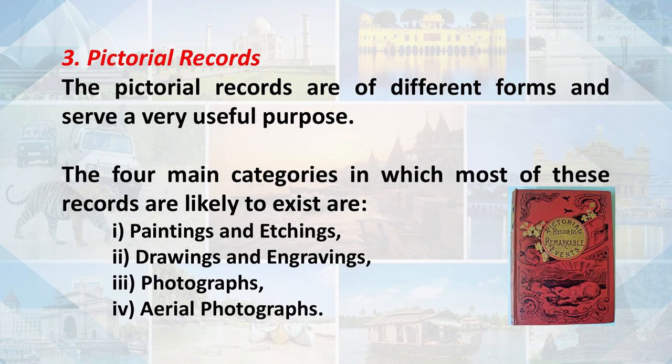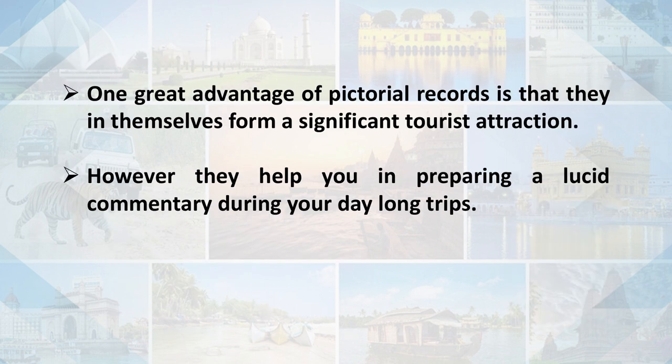Another point is pictorial records. Pictorial records are of different forms and serve a very useful purpose. The four main categories are paintings and etchings, drawings and engravings, photographs, and aerial photographs. One great advantage of pictorial records is that they in themselves form a significant tourist attraction. They also help you in preparing a lucid commentary during your day-long trips or sessions.